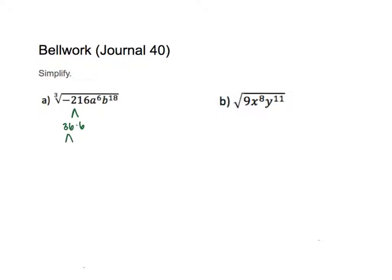36 can be broken down as 6 times 6. I only care about the cube root, and cube roots look for triples — three numbers that are the same. In this case I've arrived at three 6s. Notice I have three 6s, so I can bring out a 6. But because it's negative 216, this needs to be a negative 6. So the cube root of negative 216 is negative 6.